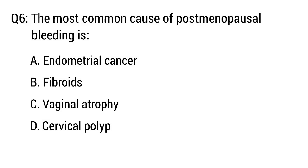Question number 6. The most common cause of postmenopausal bleeding is — the right option is option C: Vaginal atrophy.